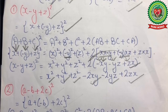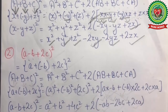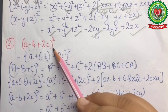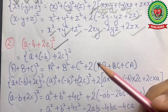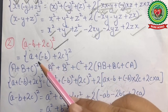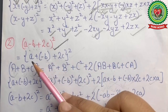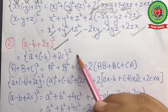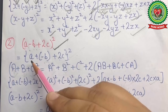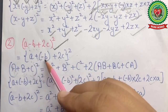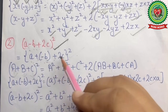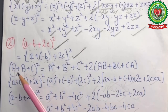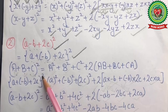Now we are going to discuss one more example based on the same topic. The second example is (a - b + 2c)². Here also we are going to rewrite the statement in the form of (a + b + c)². After rewriting, we get a + (-b) + 2c, whole square.